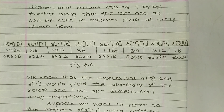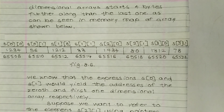We know that the expressions s[0] and s[1] yield the addresses of the zeroth and first one-dimensional arrays respectively. So s[0] and s[1] are yielding addresses of the 0th and 1st one-dimensional arrays.